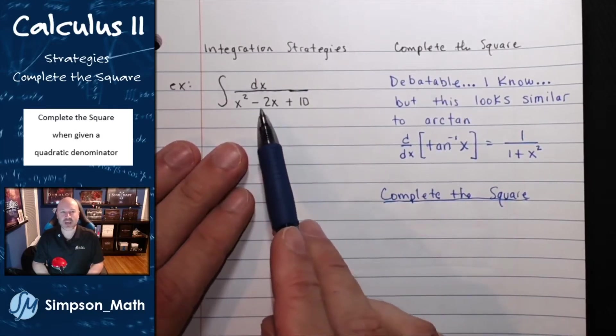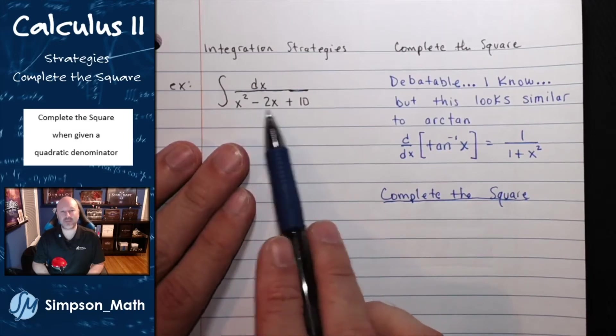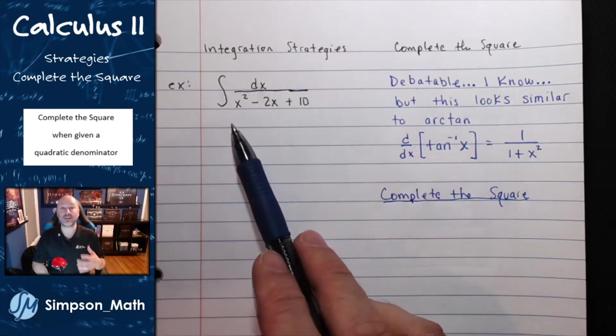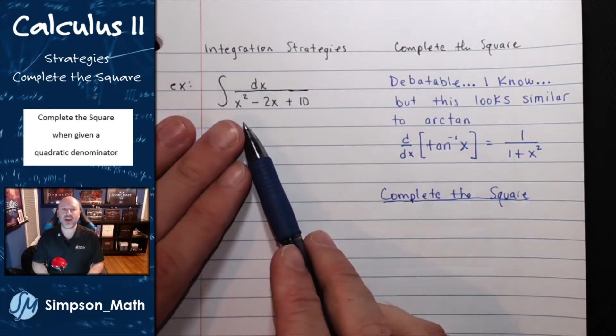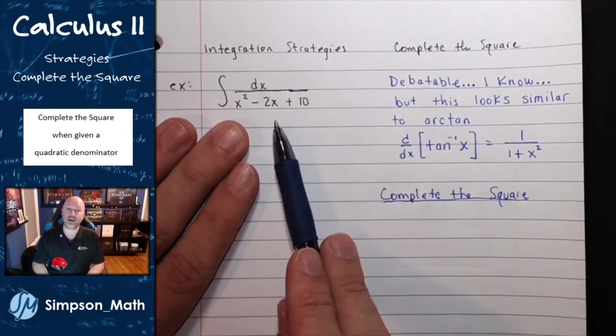So my hint to you, or my strategy to you, is if you're given a quadratic term in the denominator, and you're unable to use u-substitution or any other clever way, then maybe complete the square of that quadratic term in the denominator.